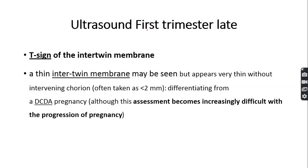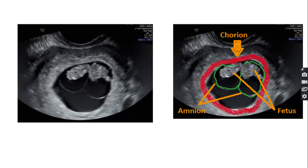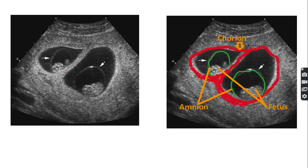In the later part of the first trimester, the inter-twin membrane is present in monochorionic diamniotic twin pregnancy. This inter-twin membrane is much thinner, less than two millimeters. You can see the single gestational sac with two fetuses, the amnion, and one chorion.